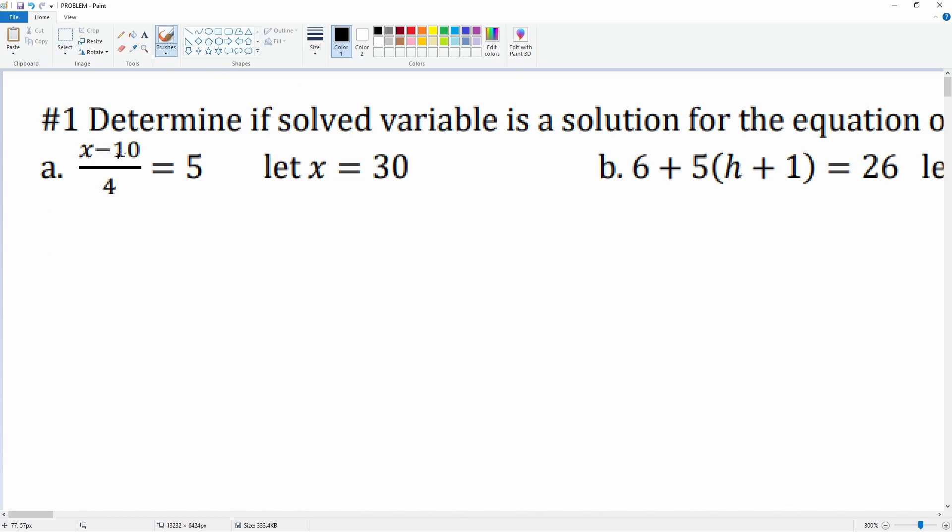So we have x minus 10 divided by 4 equals 5. Where x is, we put in a 30. So this is where the x was, so we put in that 30. Here, let me write it for you. x minus 10 divided by 4 is equal to 5. We take out the x and we plug in that value that it says here, which is 30.